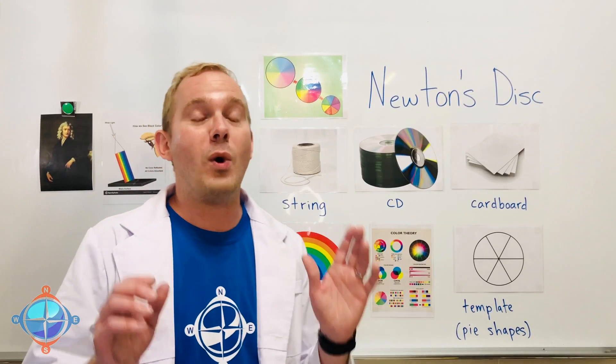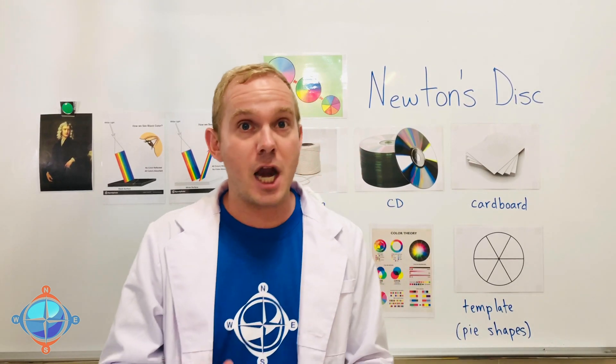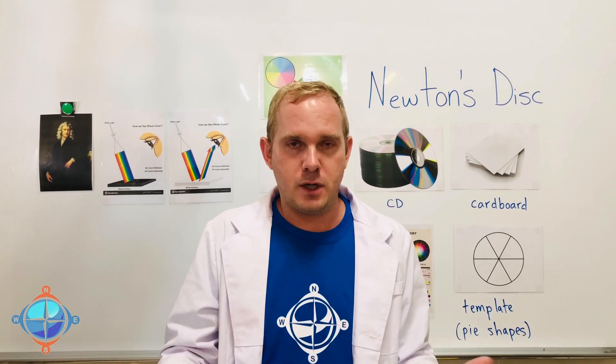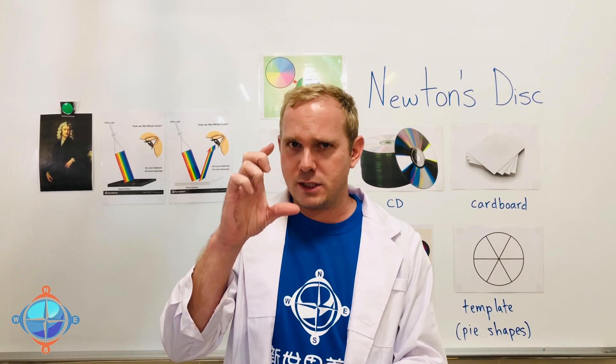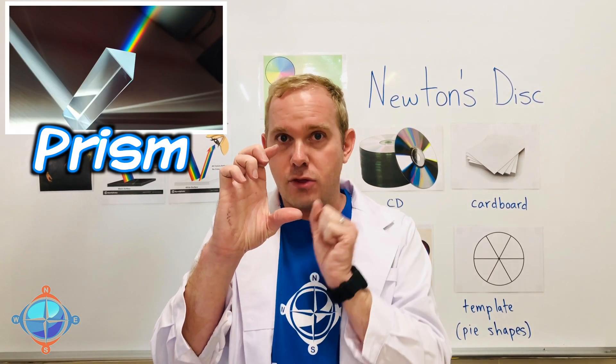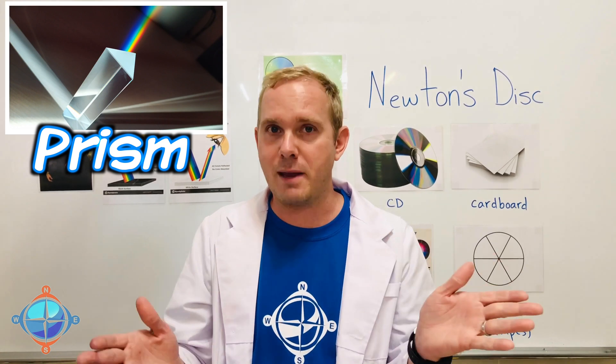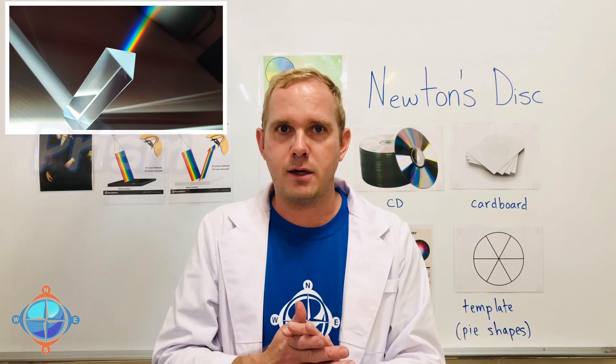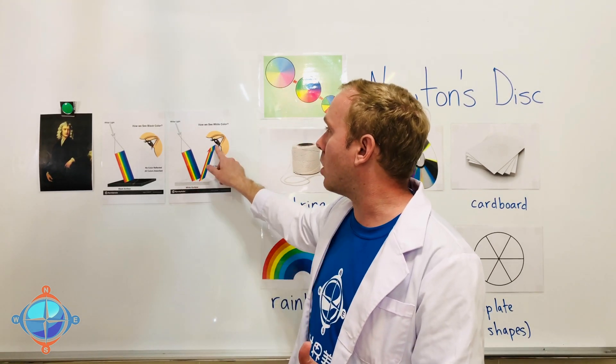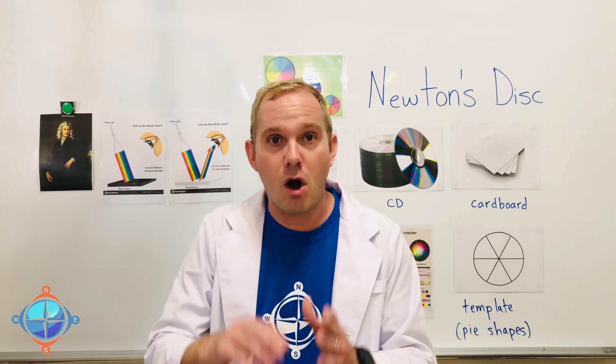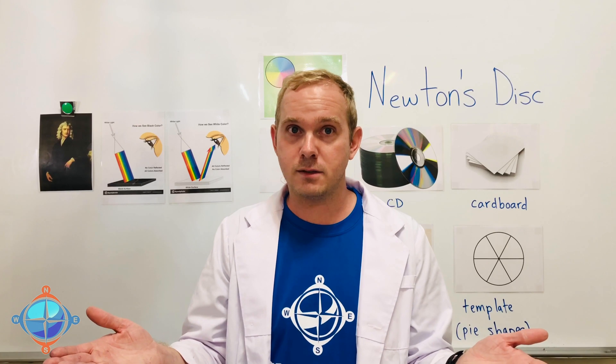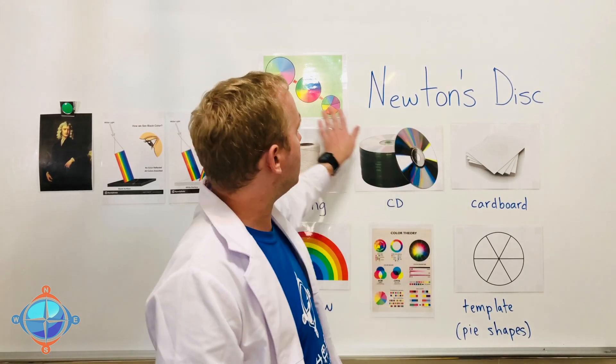Newton was fascinated by this and he made a number of experiments to test what happens to light. So he made a prism, which is a glass triangle, that sent white light through the prism. What came out was a rainbow. Newton thought that if white light was all the colors of the rainbow, then if we could see all the colors at the same time, it would look white. So he made Newton's Disc.